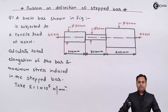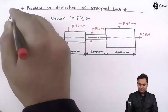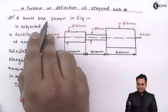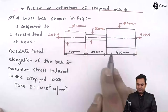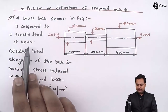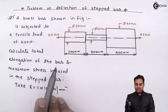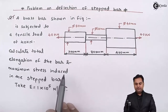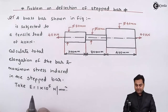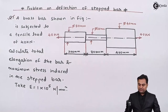Hello friends. In this video we are going to see a problem on deflection of a stepped bar. A brass bar shown in the figure is subjected to a tensile load of 40 kilonewton (pull type of load). Calculate the total elongation of the bar and maximum stress induced in the stepped bar. Take Young's modulus E as 1 × 10⁵ Newton per mm square.